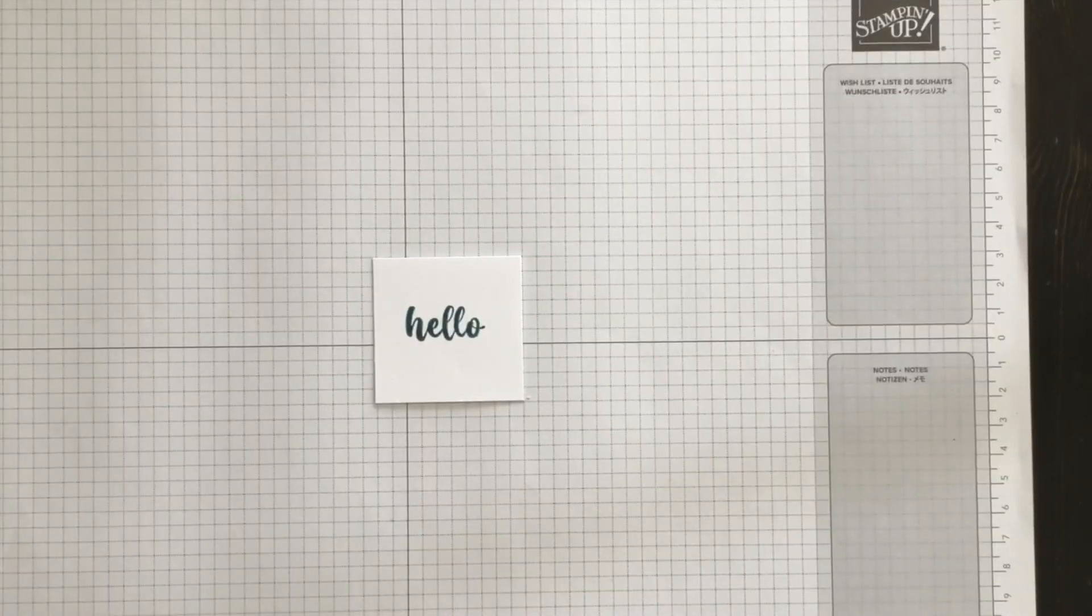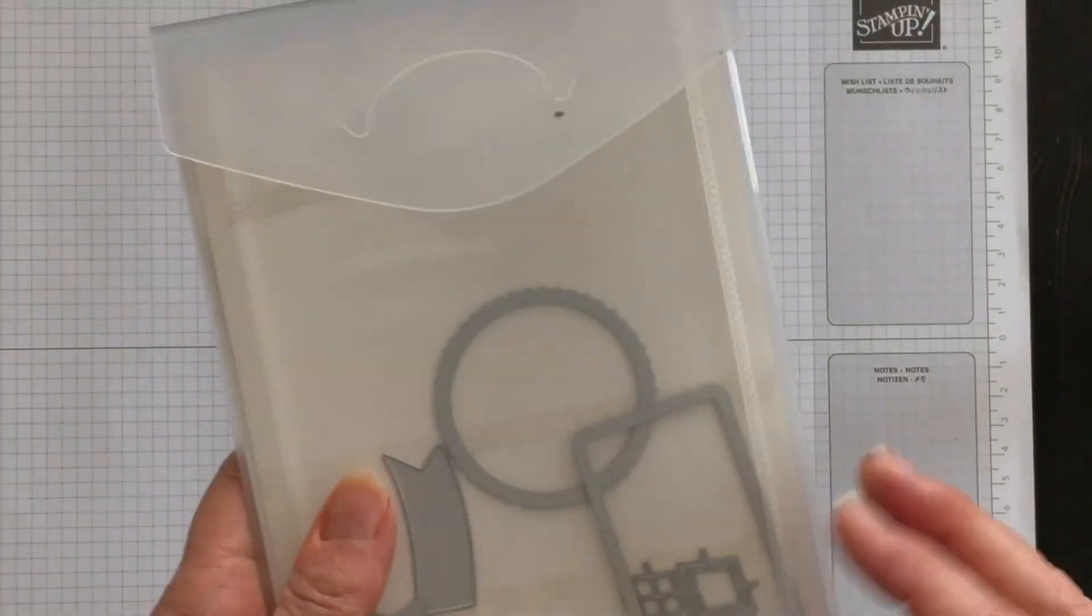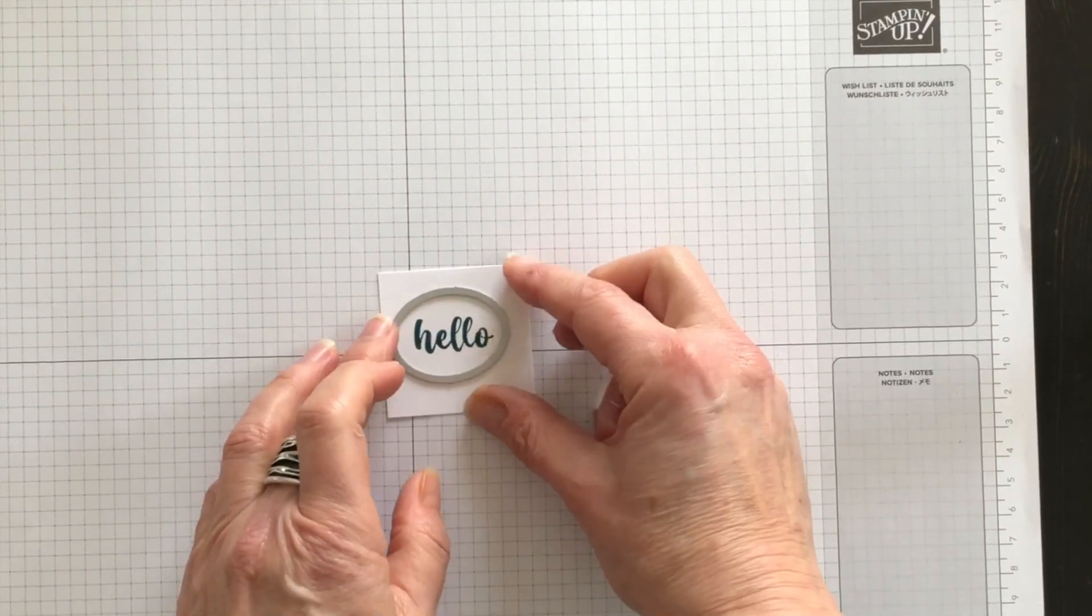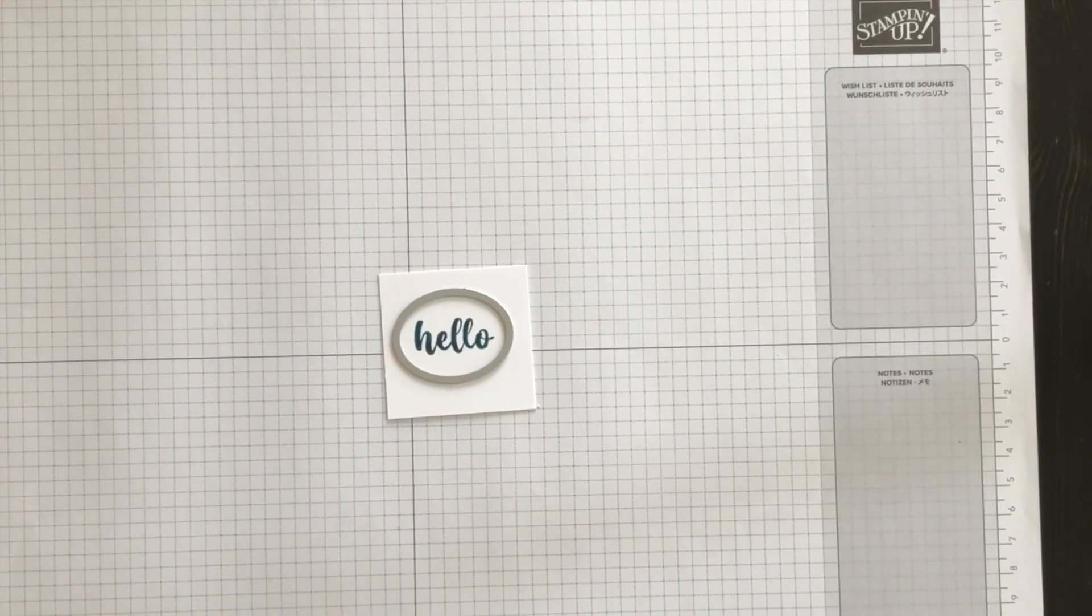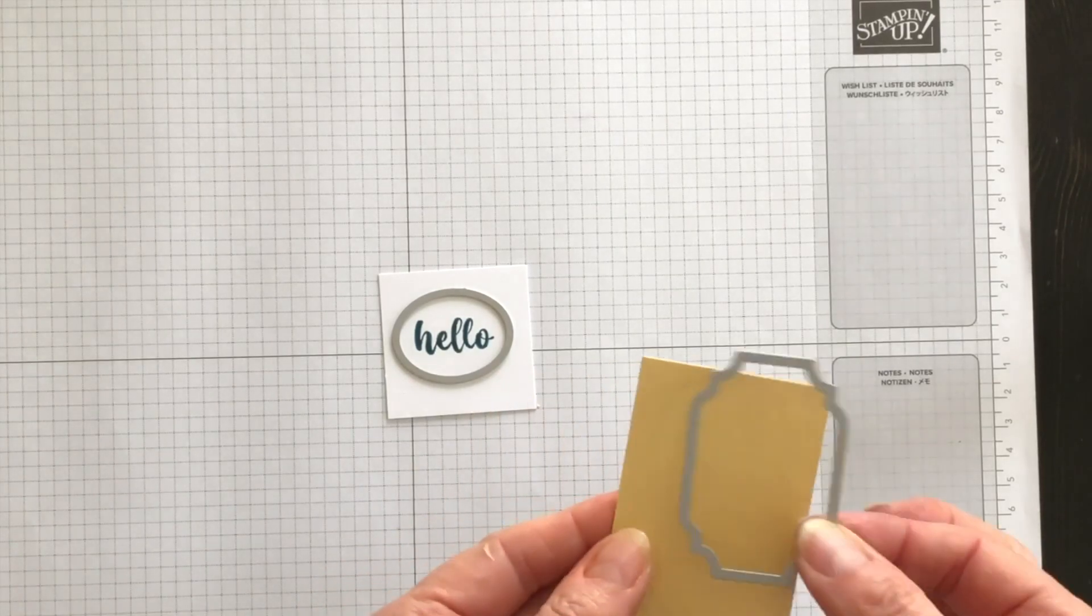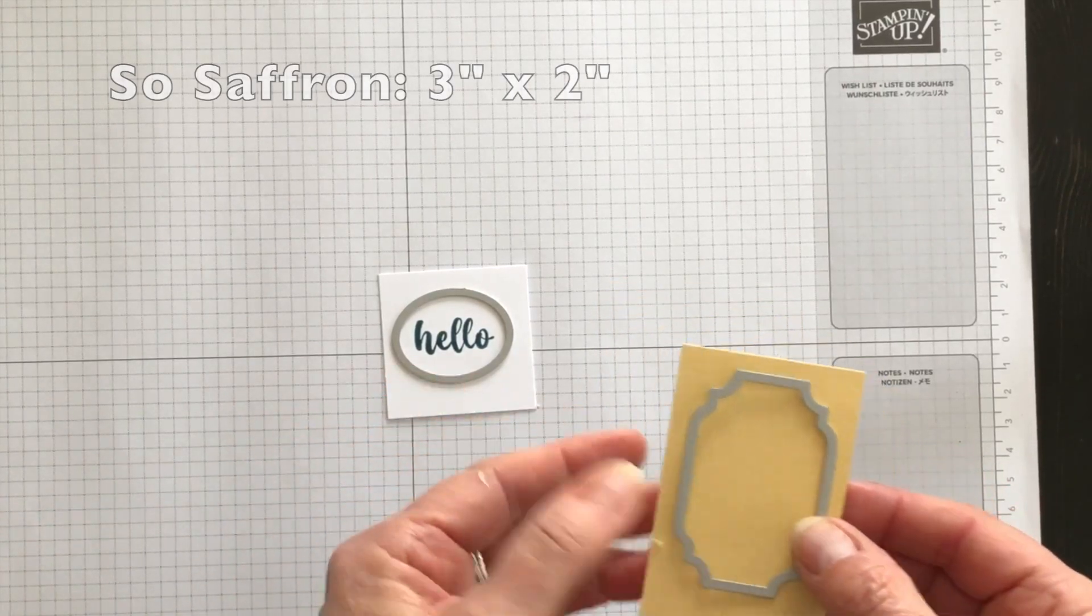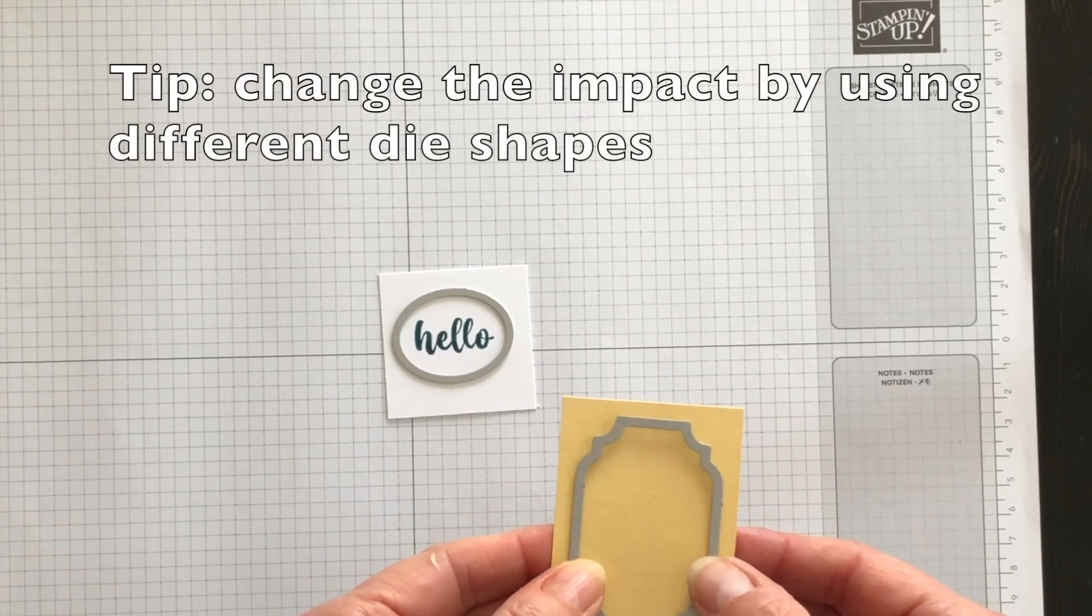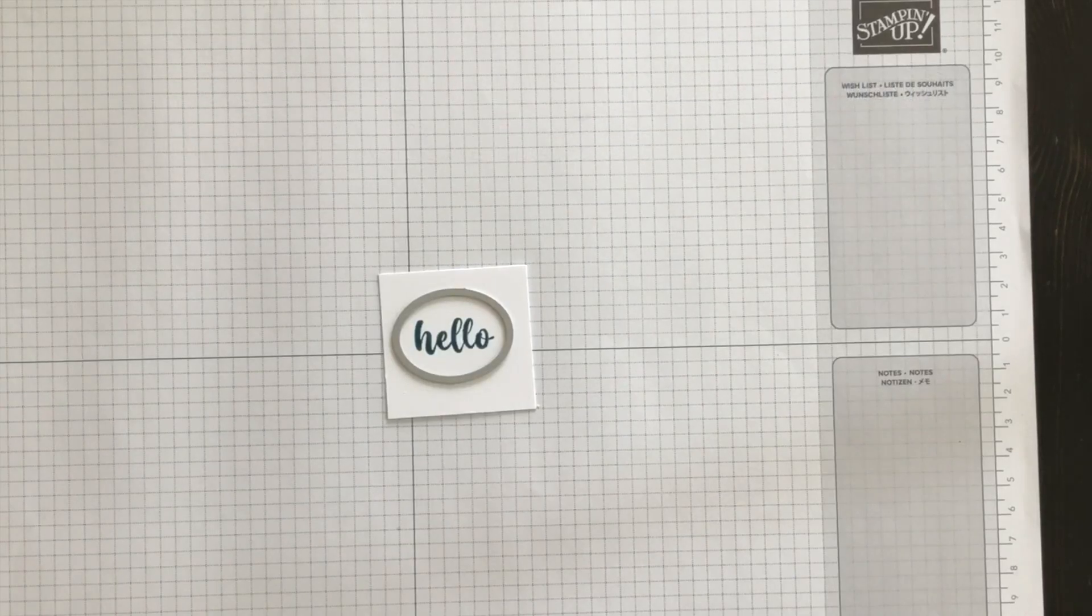Now, to die cut this out, I'm going to be using the All That dies, and I have this little oval die that fits perfectly around the Hello image. And then I'm going to take one of the other dies in the die pack, and I'm going to die cut a layer that will go underneath this using So Saffron. So I'll go over to my Stampin' Cut and Emboss machine, I'll die cut these out, and we'll move on to the next step.